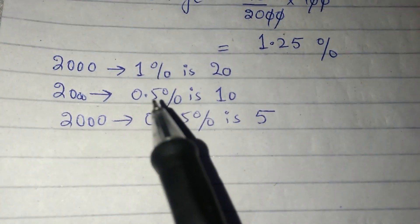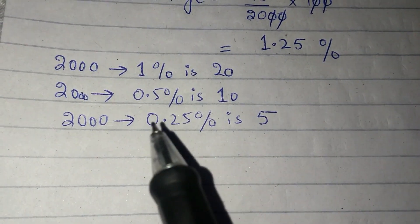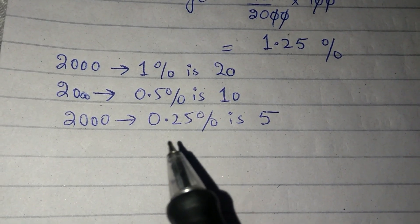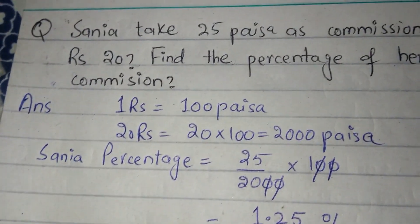1 percent is 20, so 0.5 percent is 10. Then 5, so 0.25 percent will be. 20 plus 5 equals 25, Sania's commission, which is 1.25 percent.